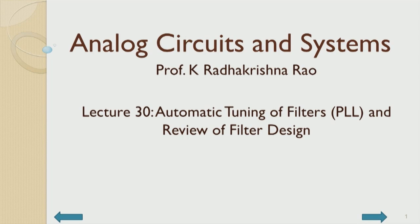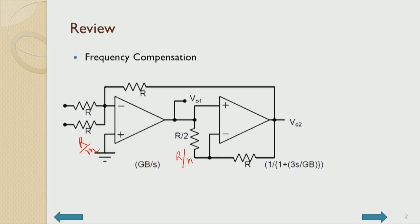Today we are on to lecture 30, connected with automatic tuning of filters and review of filter design. This is the last lecture on filters. In the last lecture we talked about frequency compensation. The frequency compensation for the double integrator loop can be done in several ways. One is the non-ideal effect of the op-amp — finite gain bandwidth product affecting the integrators and the summing amplifier — which can be compensated for by changing the summing amplifier to a modified structure, so that the delay caused by the integrators and the summing amplifier can be compensated for.